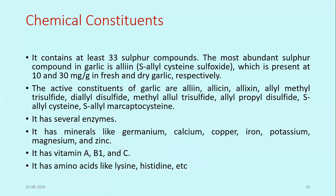Regarding chemical constituents, garlic contains at least 33 sulfur compounds. The most abundant sulfur compound is Alliin or S-Allyl-Cysteine Sulfoxide, present at 10 to 30 mg per gram in fresh and dry garlic respectively. The active constituents include Alliin, Allicin, Allyl-Methyl-Trisulfide, Diallyl-Disulfide, Allyl-Propyl-Disulfide, and S-Allyl-Cysteine.